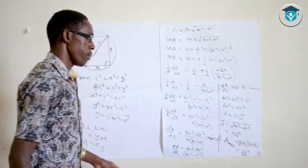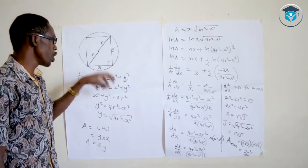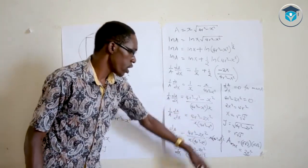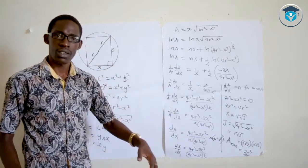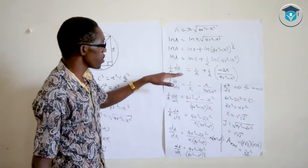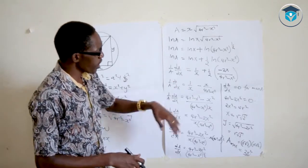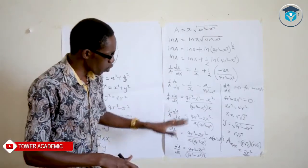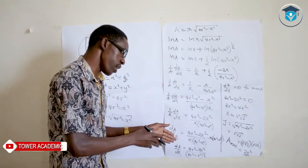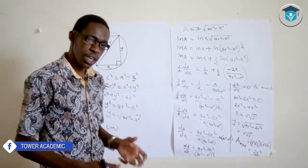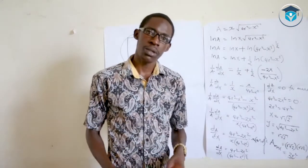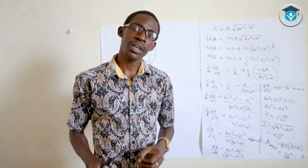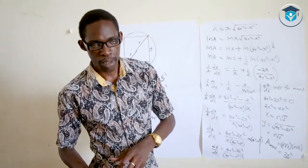Therefore the maximum area of the rectangle inscribed in the circle is 2r². If the problem had asked to confirm maximum or minimum, we would differentiate a second time. A negative second derivative confirms a maximum; a positive second derivative confirms a minimum. Since the problem specifies maximum, we just needed x, y, and the maximum area. Thank you for watching Tower Academic — please leave comments and questions. I remain Alan Samuel Wafula, math and physics teacher.